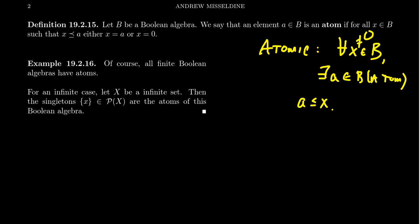There do exist infinite atomic Boolean algebras. The best example is the power set of a set: if X is an infinite set, its power set is likewise infinite. The singletons are going to be the atoms of that Boolean algebra. Therefore, a power set algebra is always going to be an atomic Boolean algebra. There do exist infinite non-atomic Boolean algebras, although that takes us beyond the scope of our course, as we are essentially at our very last lecture.